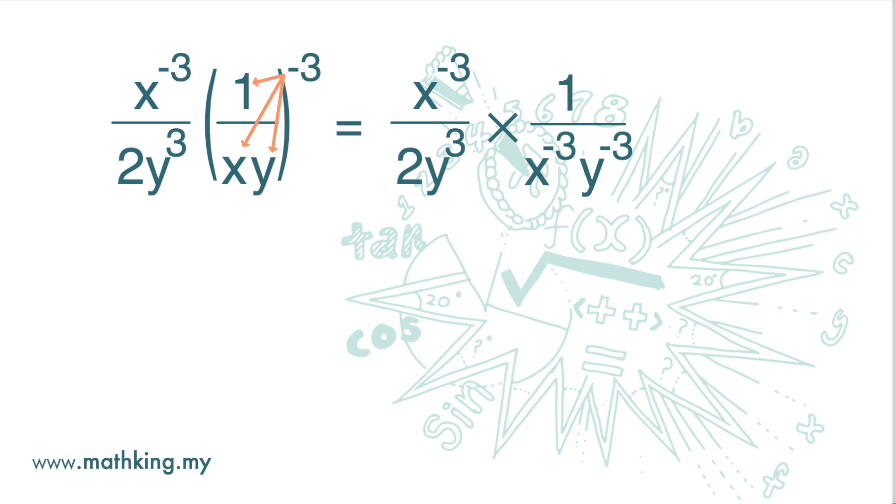Next, we cancel out the x to the power of negative 3. And then for y, since this is multiplication, we are going to add up the indices. So down there, we get y to the power of 3 plus negative 3.